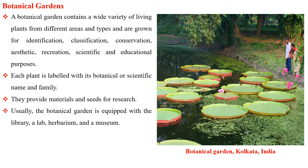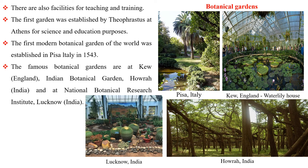Usually the botanical garden is equipped with a library, a lab, a herbarium and a museum. There are also facilities for teaching and training. The first garden was established by Theophrastus at Athens for scientific and educational purposes. The first modern botanical garden of the world was established in Pisa, Italy in 1543.